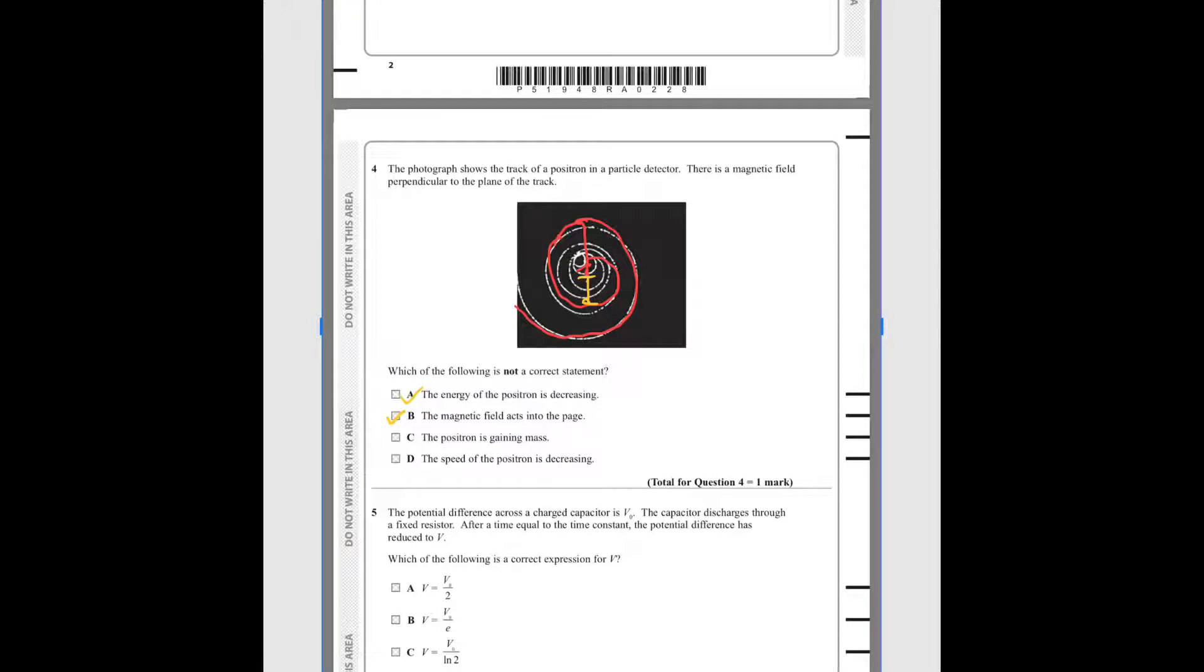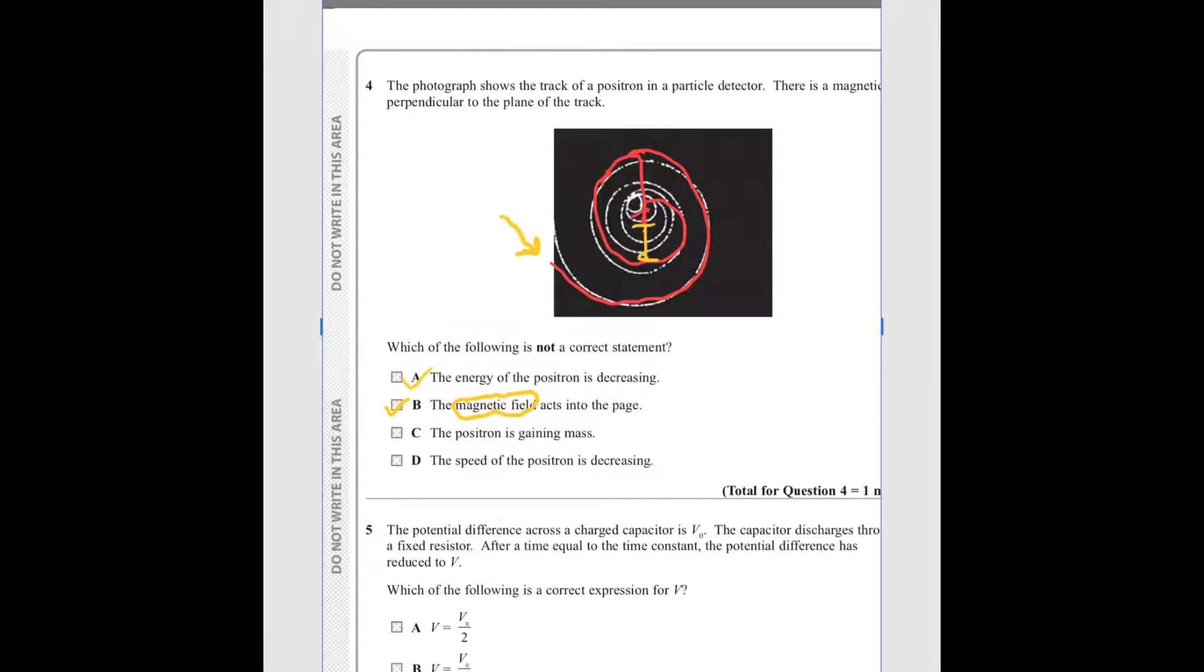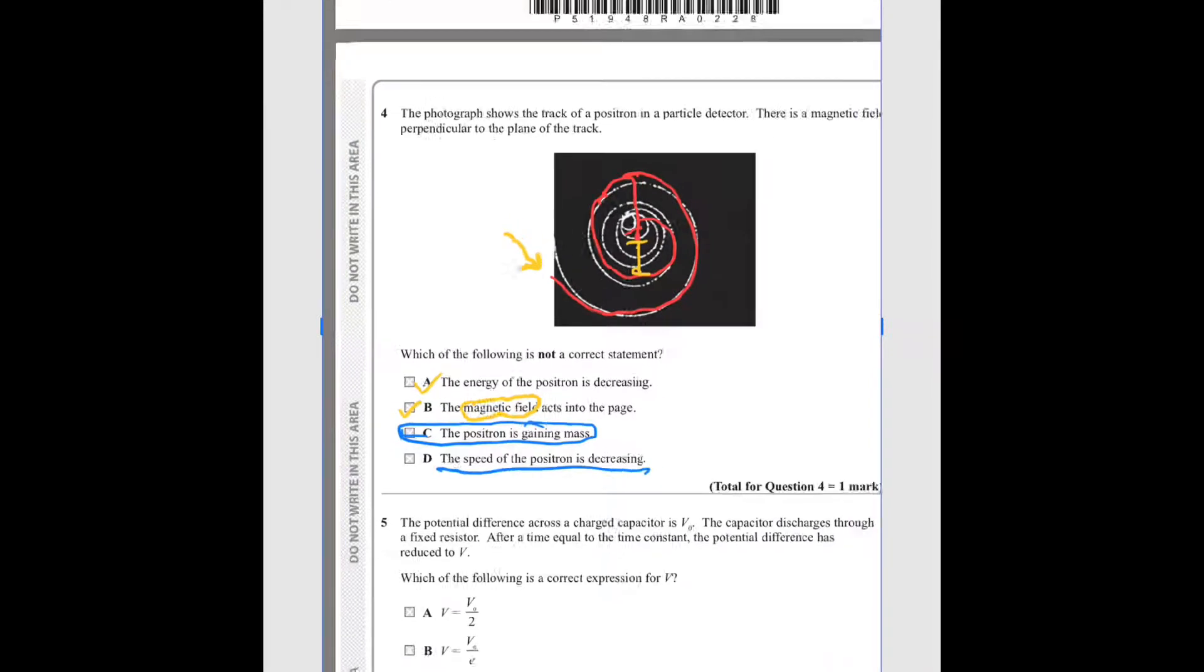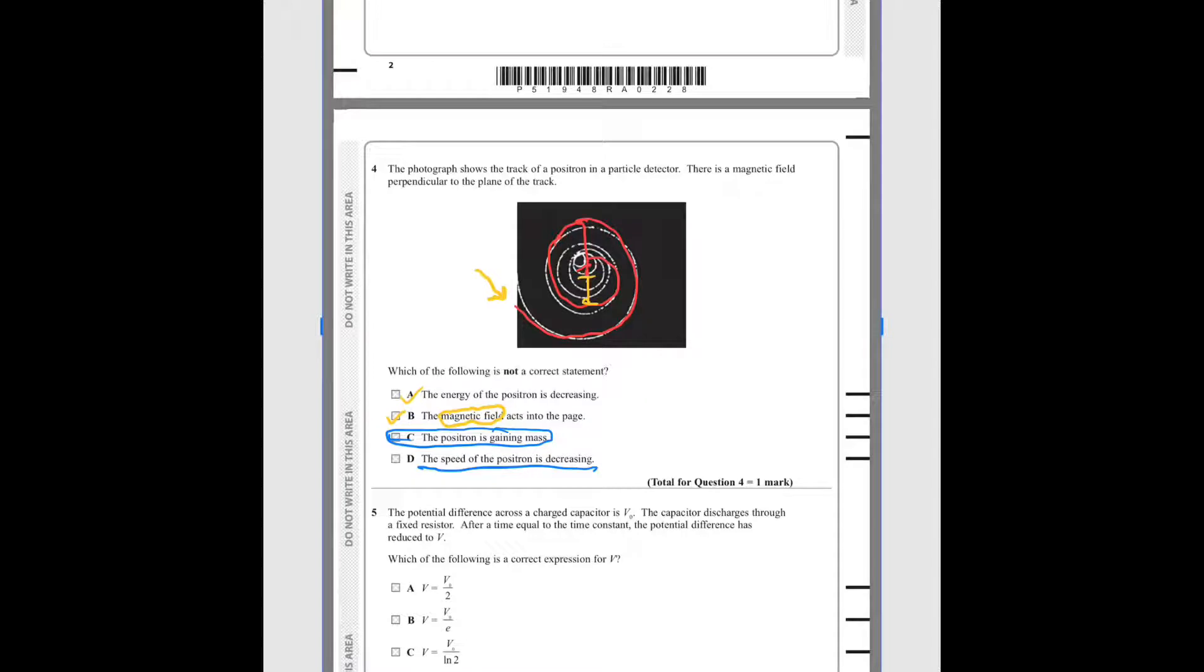The magnetic field acts into the page. Since the particle enters the picture from the left-hand side, it's clear that the magnetic field will be acting out of the page. The positron is gaining mass. In any movement, a particle does not have a change in mass. So this is a correct statement. The speed of the positron is decreasing, as I have told earlier. R equals p by bq. When the radius is decreasing, p is decreasing. P equals mv. When p is decreasing, v is decreasing. So this statement is also true.